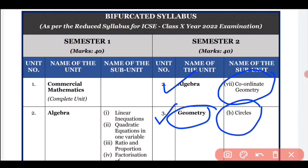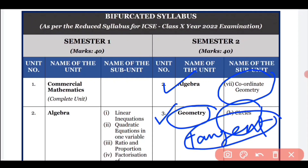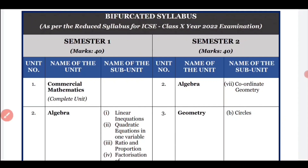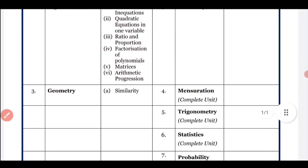In Circles, the portion that has been reduced is the construction of tangent. You don't have to study that part — the construction of tangent has been removed. If you are confused about which portions are included, note that this part is excluded.